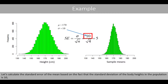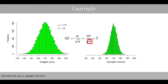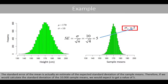Let's calculate the standard error of the mean based on the fact that the standard deviation of the body height in the population is 10, and that we use a sample size of 4. We see that the standard error is equal to 5. However, how do we interpret this value? The standard error of the mean is actually an estimate of the expected standard deviation of the sample means. Therefore, if we would calculate the standard deviation of the 10,000 sample means, we would expect to get the value of 5.